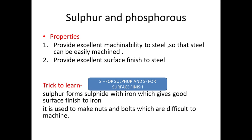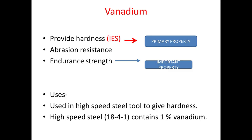Next is vanadium. Vanadium provides hardness, abrasion resistance, and endurance limit. Here hardness is the primary property provided by vanadium. It is used in high-speed steel to provide hardness to cutting tools.